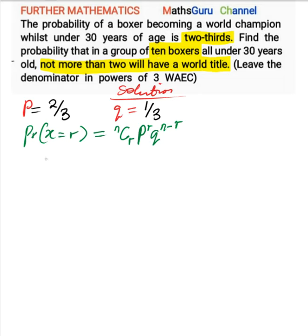In this case, n is equal to 10, since there are 10 boxers involved in these trials. Then r will be equal to the number of successes. The question states 'not more than 2 will have a world champion title,' which means 2 or below. So the number of successes can either be 2, 1, or 0.